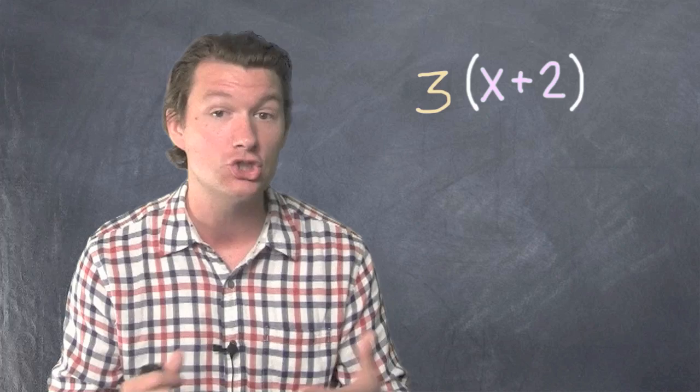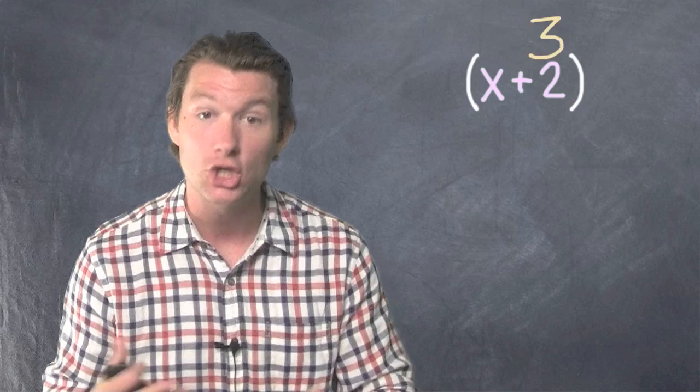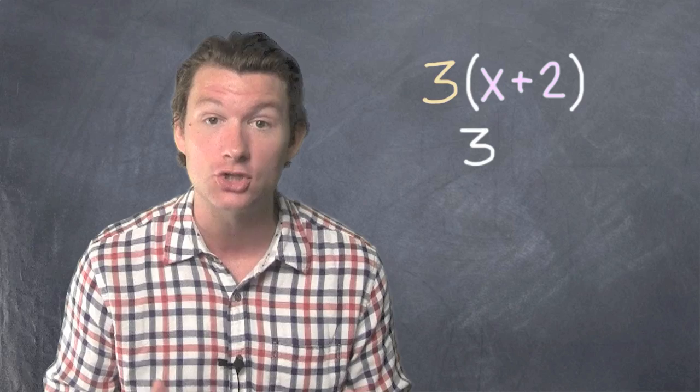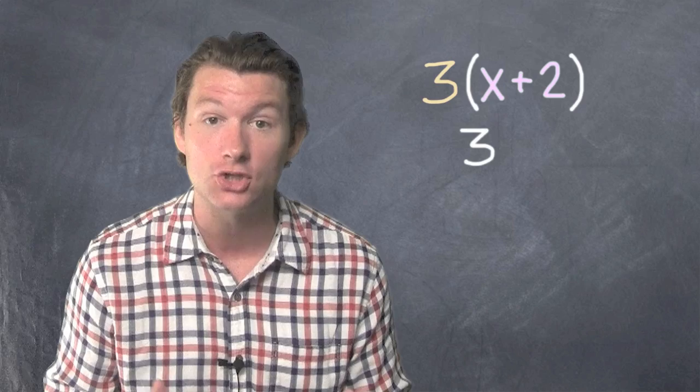Let's have the 3 pay a visit to the x and a visit to the 2 using multiplication. 3 times x and then 3 times 2 and we'll add them together. So 3 times x is 3x. 3 times 2 is 6. And so our final answer is 3x plus 6. That's how we use the distributive property.